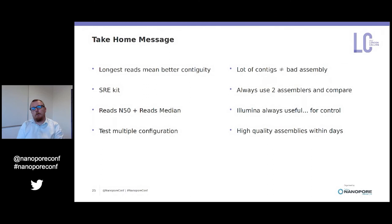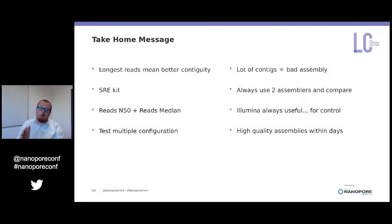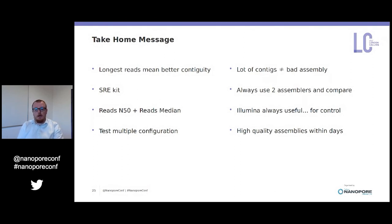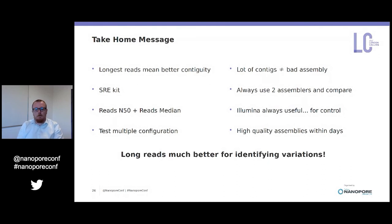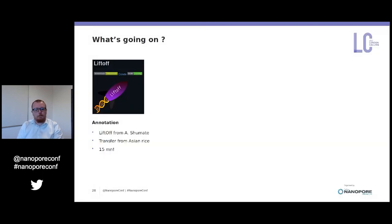We always use two assemblers — even when one is clearly preferred — so we can check for structural anomalies and determine whether any unusual structure is an assembler artifact or true biological variation. We still use Illumina but only for control. We can achieve high-quality assemblies within days: from base-calling to final contigs takes about three days. Long reads are much better than short reads for identifying variation.